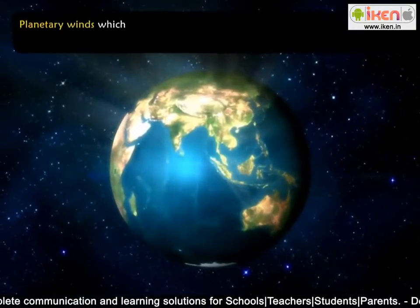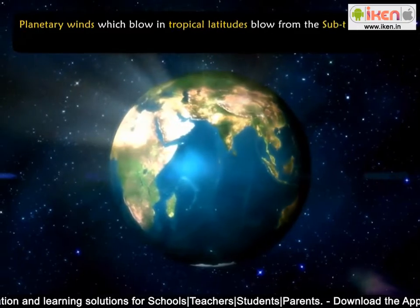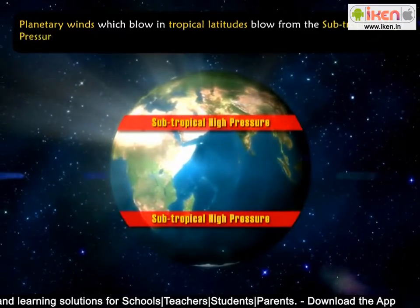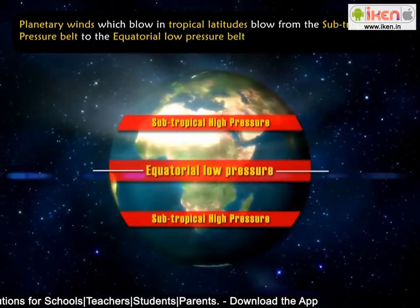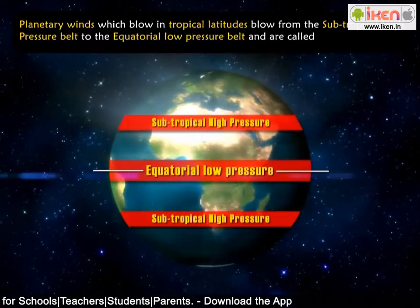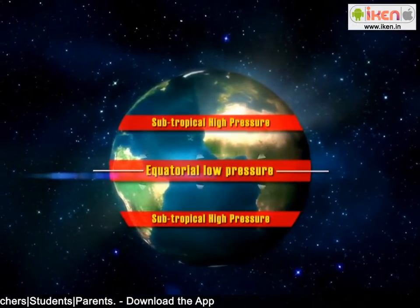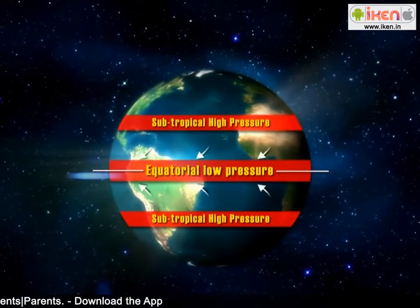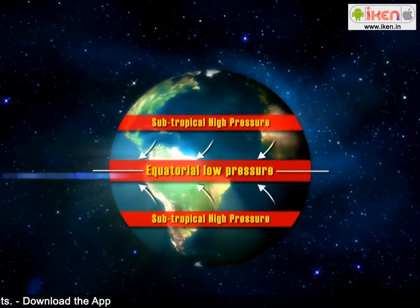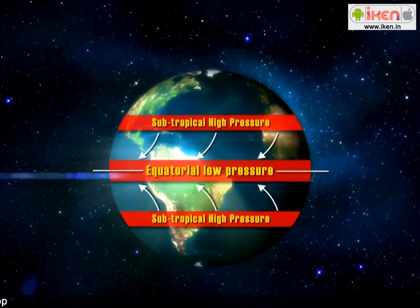Planetary winds which blow in tropical latitudes blow from the subtropical high-pressure belt to the equatorial low-pressure belt and are called trade winds. The name trade is derived from a nautical expression 'to blow tread', meaning to blow along a regular path or tread.